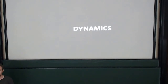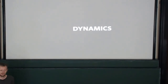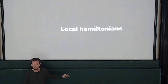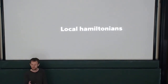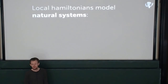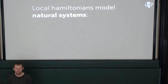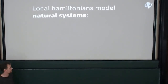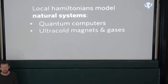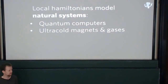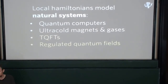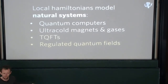What about dynamics? How does this thing change as time progresses? You need to introduce a Hamiltonian. In particular, I'm not going to tell you about Hamiltonians full stop — I'm going to tell you about a special subclass called local Hamiltonians. These are the central objects of study in condensed matter theory and quantum information theory. We know that local Hamiltonians model quantum computers, the evolution of quantum computers, ultra-cold magnets and dilute atomic gases, topological quantum field theories, and regulated quantum fields, which are the building block of the Wilsonian view of quantum field theory.